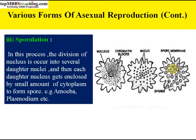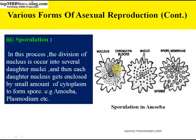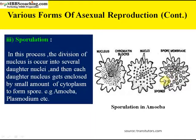In sporulation in amoeba: amoeba in unfavorable living conditions withdraws its pseudopodia and secretes a three-layered hard covering or cyst around itself. The phenomenon of forming a cyst is termed encystment. In favorable conditions, the encysted amoeba divides by multiple fission and produces many minute amoeba or pseudopodia spores. The cyst wall then bursts and spores are liberated into the surrounding medium, which grow into many amoeba. This whole phenomenon is known as sporulation.